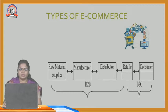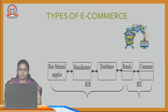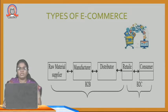Types of e-commerce. Raw material supplier goes to manufacturer; manufacturer produces material that goes to distributor — up to this point we call it B2B, business to business. When it goes to retailer and then consumer, it is called business to consumer or customer.